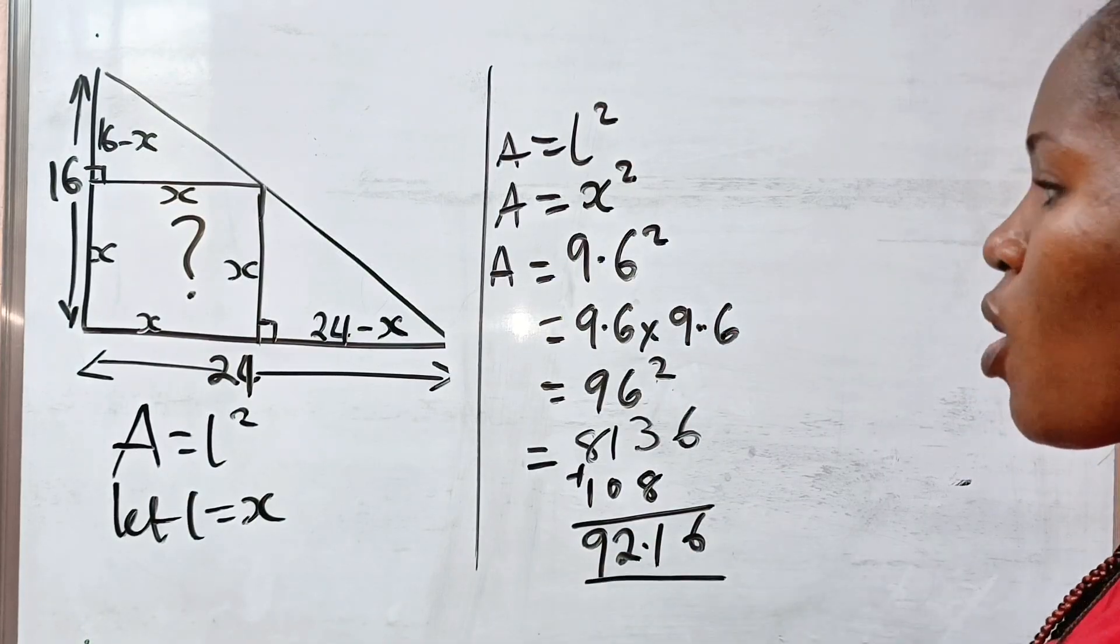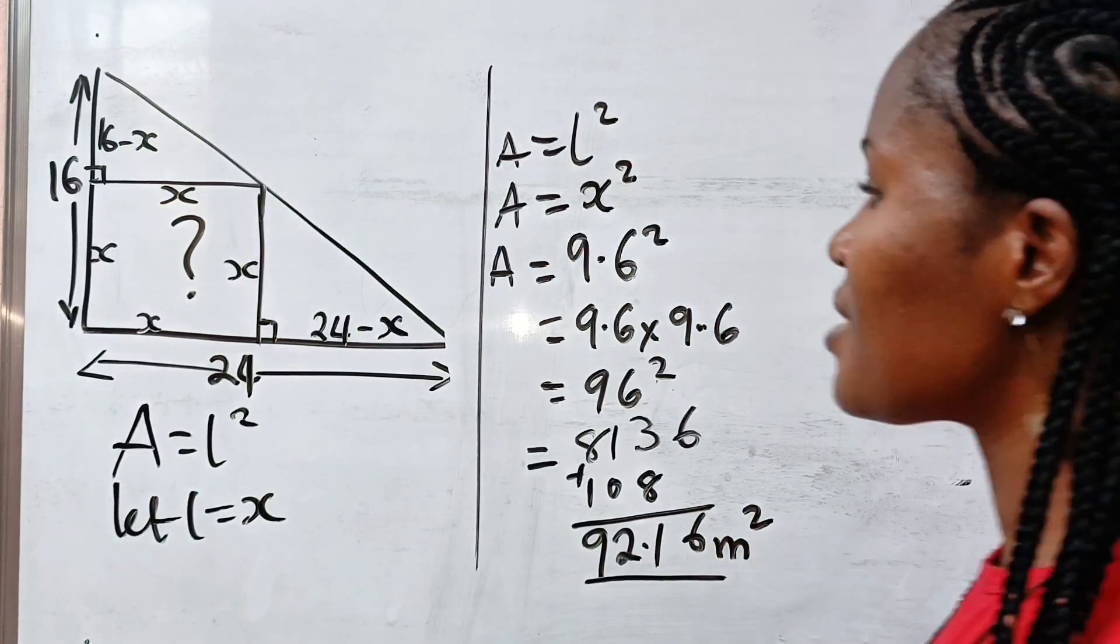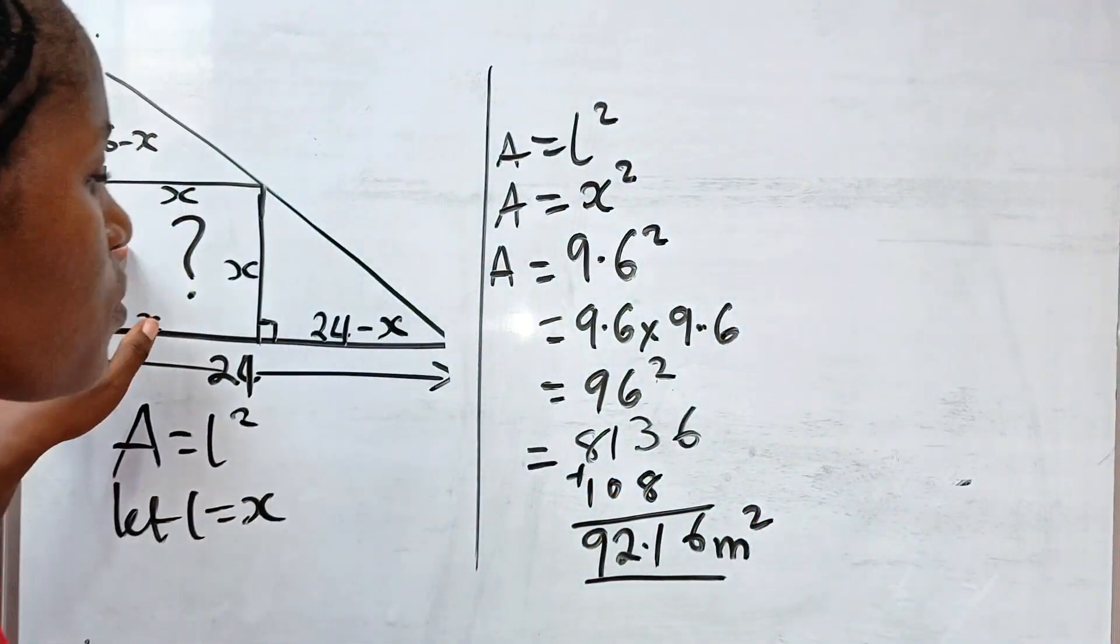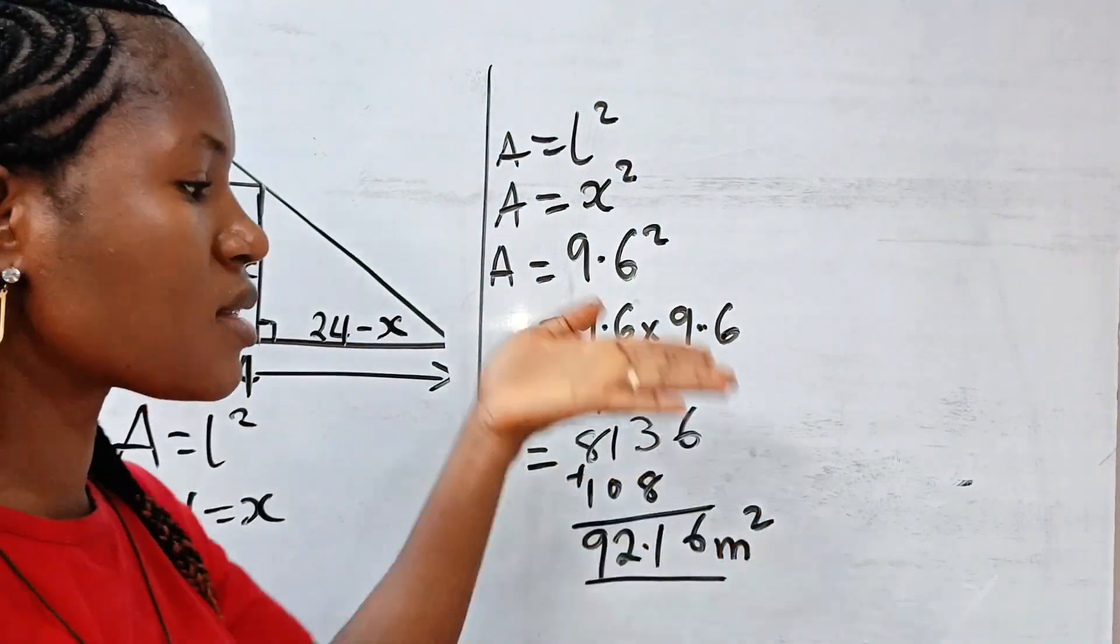Now, remember that we have two decimal places here. So 1, 2. So this becomes 92.16 square meters. So the area of this shaded portion is 92.16 square meters.